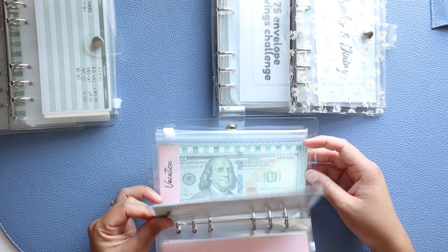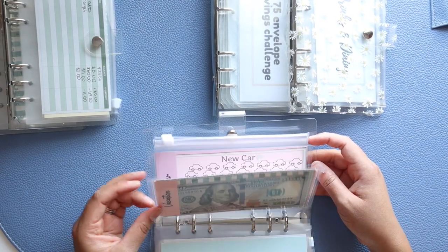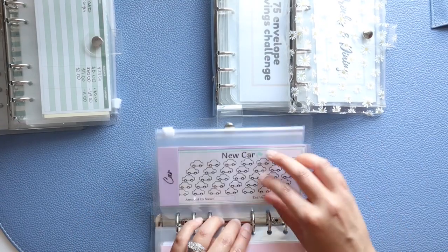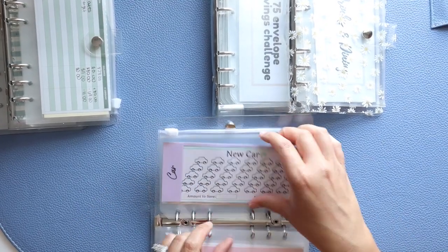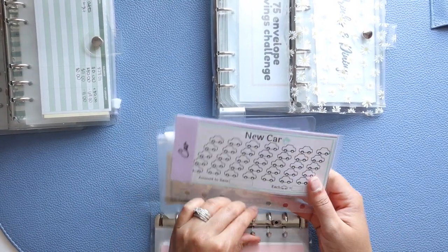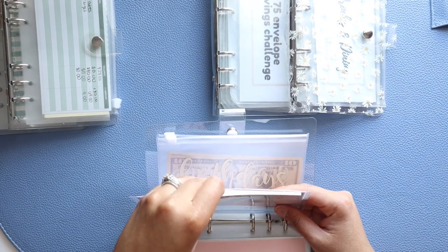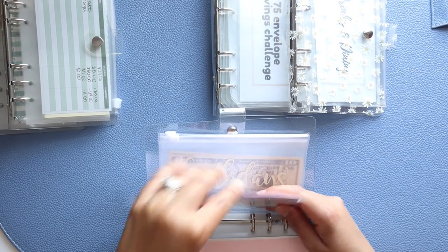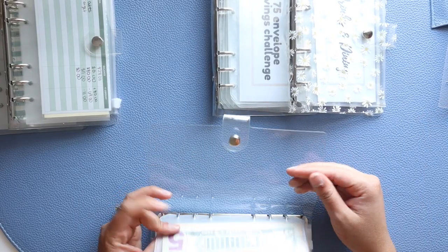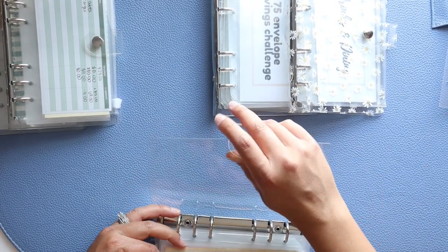Home is staying, Vacations is staying. I'm gonna be taking out Car because I don't plan on getting a new car anytime soon, so I'm taking this category out. Birthdays and Anniversary is staying.